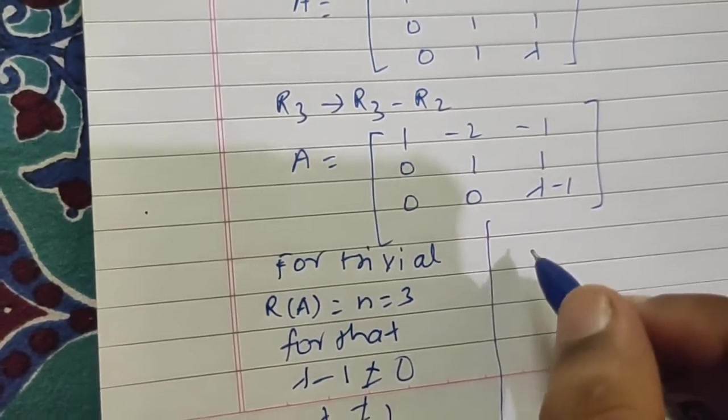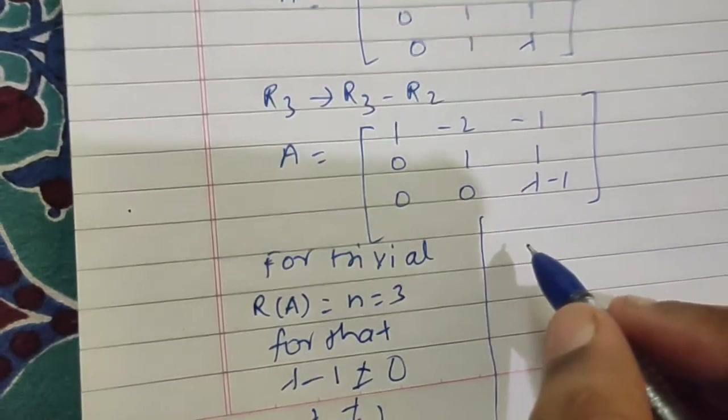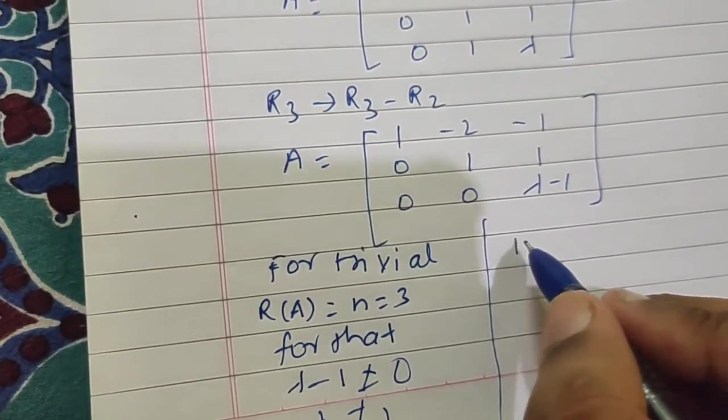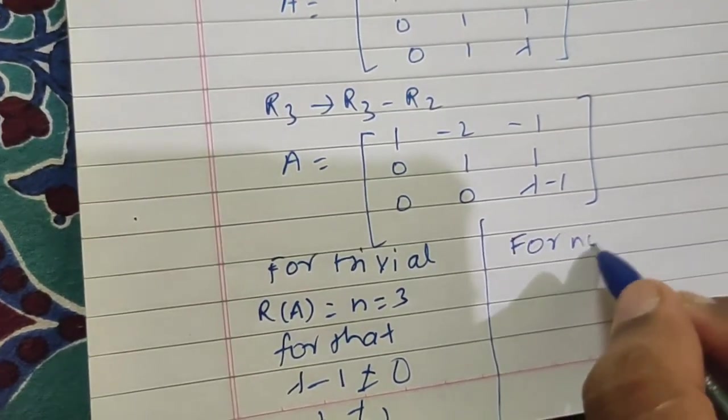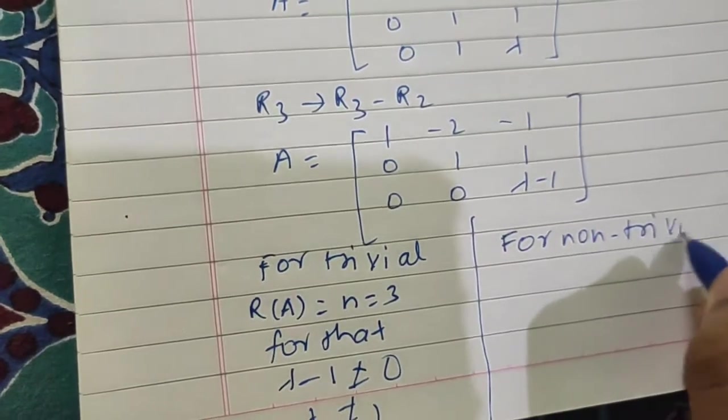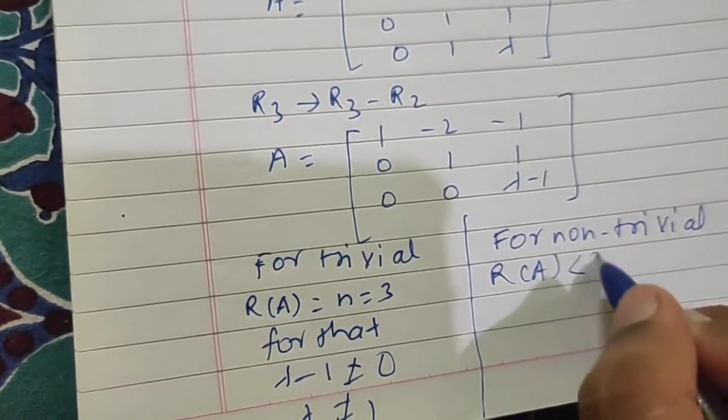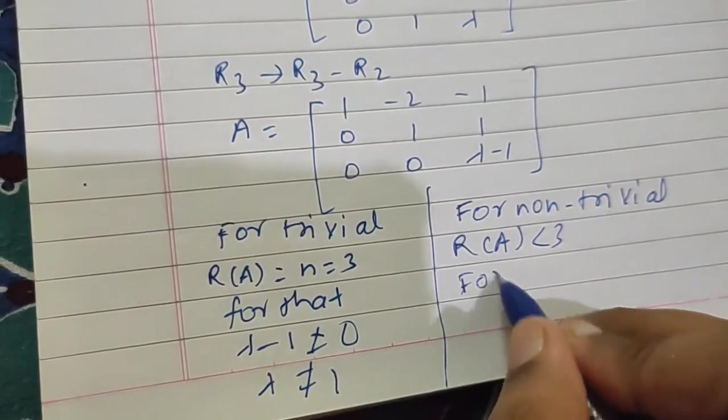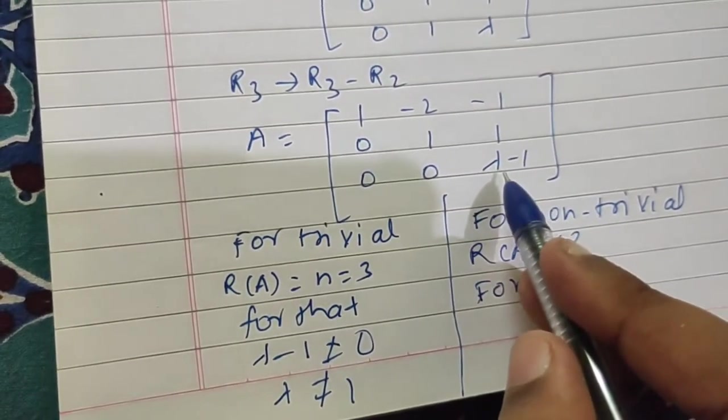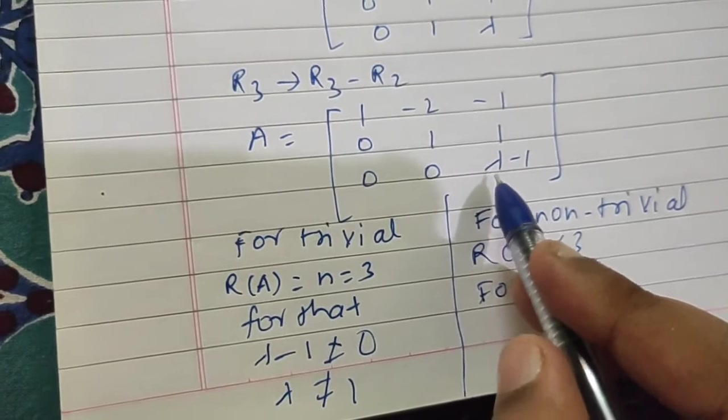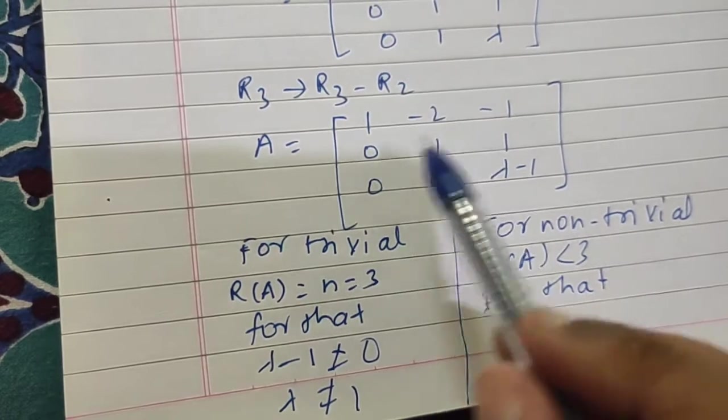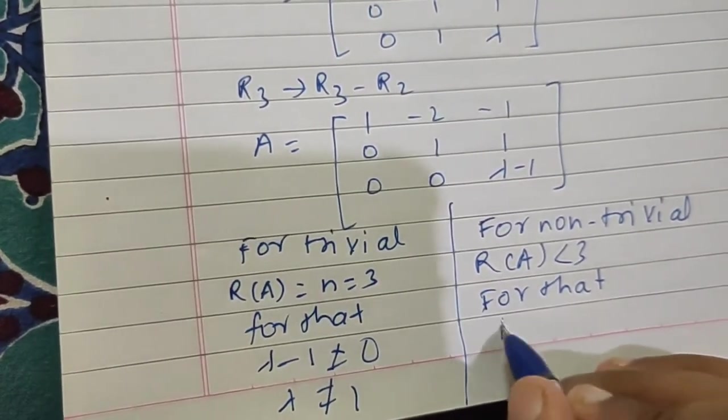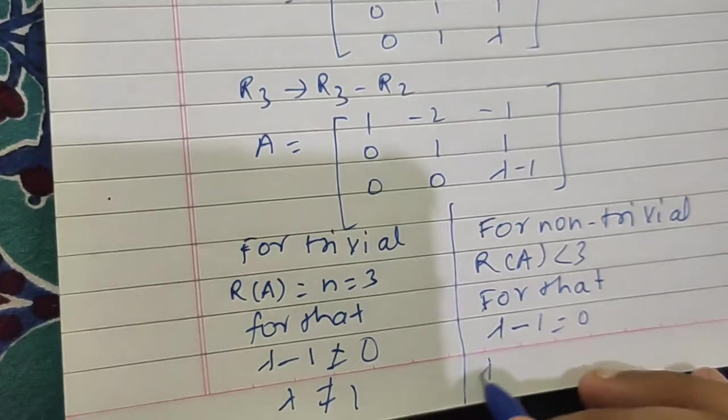For the more than one solution case, that is the infinite case, the non-trivial case, we can say that for non-trivial, rank of A should be less than 3. For that I will make this lambda 1, so lambda minus 1 is 0. Number of non-zero rows will then be 2 which equals rank. So lambda equals 1.